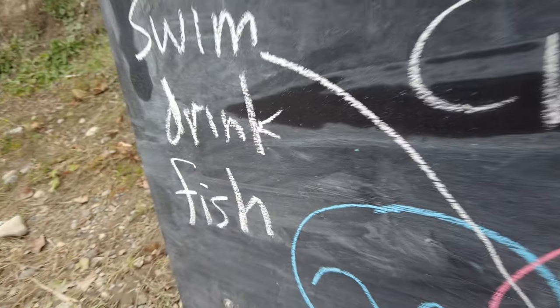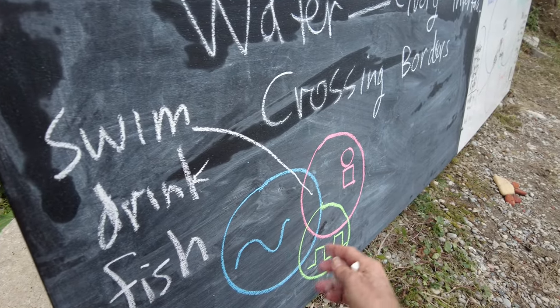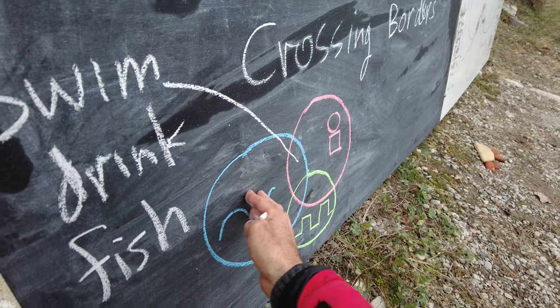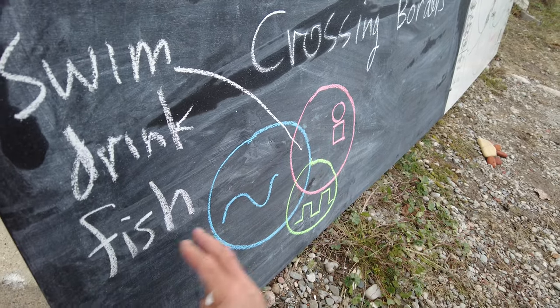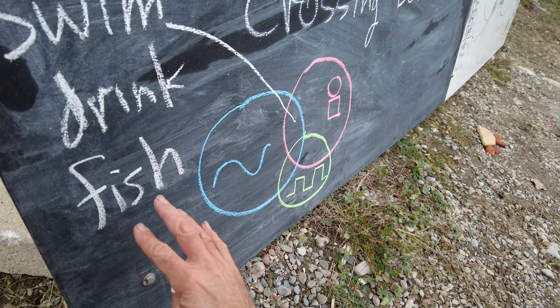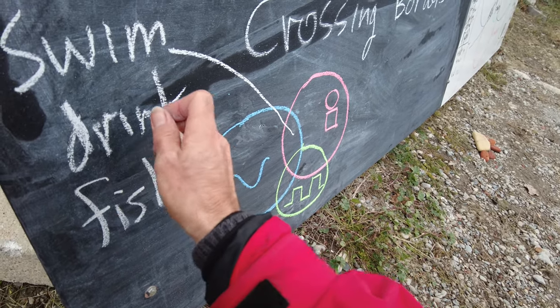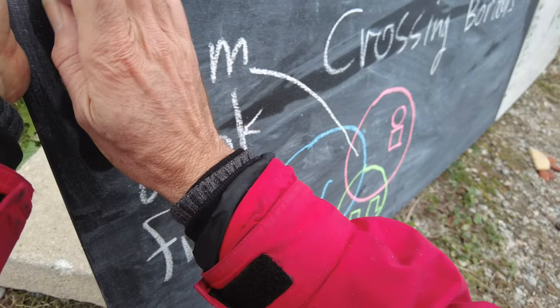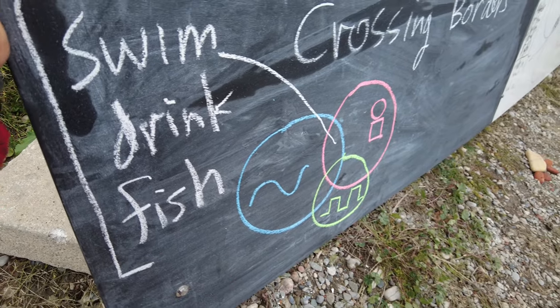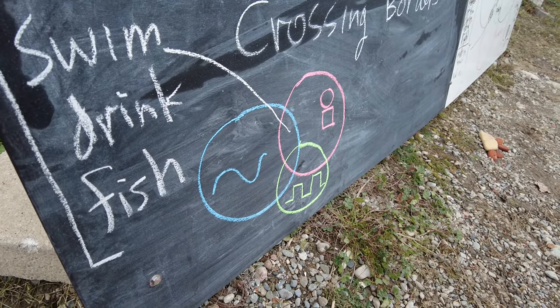Swim, drink, fish. So, when we swim, the human goes into the water. When we drink, the water goes into the human. And when we're fishing, or sunbathing, or meditating at the beach, the two are separate. So, this is like a taxonomy or ontology for the three ways that humans and water can interact.